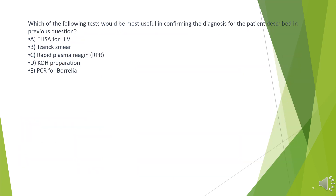Which of the following tests would be most useful in confirming the diagnosis for the patient described in the previous question? A. ELISA for HIV. B. Tzanck smear. C. Rapid plasma reagin (RPR). D. KOH preparation. E. PCR for Borrelia.